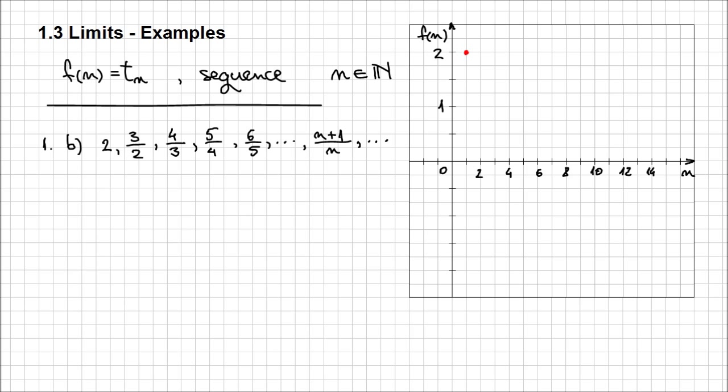I'm going to represent this point of coordinates 1 and 2. When n is 2, the second term is 3 by 2, which is right here, at 1.5, right? And I can represent all the other points. So when n is 3, 4 by 3, or 1 point period 3, it's about there.